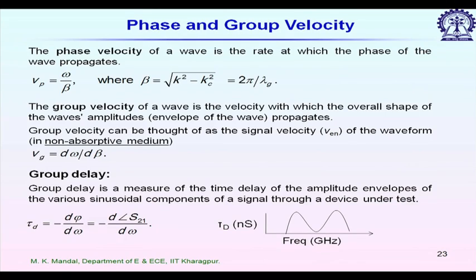Group delay is related to the angle of the transmission parameter. The angle of S21 — if I plot its variation with respect to omega — gives the group delay. Mathematically, group delay tau_d equals minus the partial derivative with respect to omega of the angle of S21.